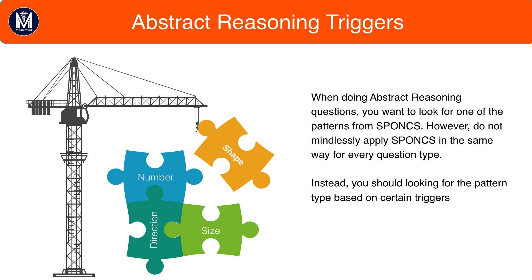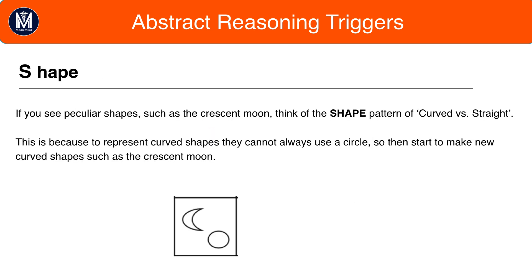So what are the different triggers? Well to begin with, let's have a look at shape. If you see peculiar shapes such as the crescent moon, think of the shape pattern curved versus straight shapes.